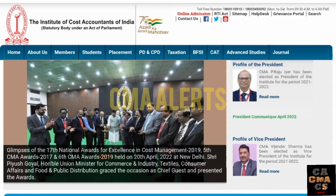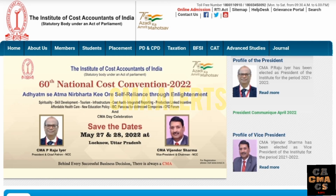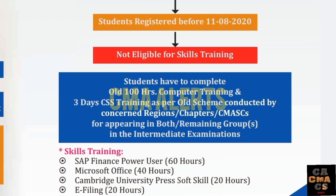Hello friends, welcome back to the channel. Important update from ICMAI for CMA students: CMA intermediate students who have registered in the intermediate course before 11th August 2020 and are still in the intermediate course are not eligible for skill training, but are required to complete 100 hours of computer training and 3 days of CSS training.